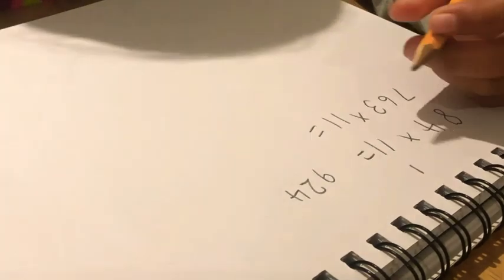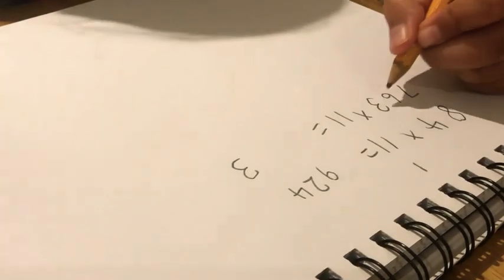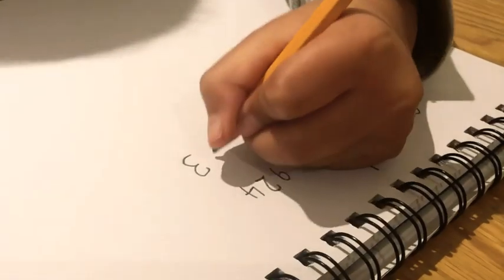So now the three goes in the ones place. It stays as it is. The three add 6 equals 9.